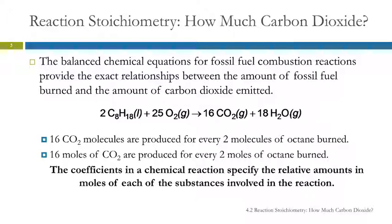Just like if you were making pancakes and the recipe called for two eggs — if you were going to make a dozen recipes, how many dozen eggs would you need? Two dozen, right? Because it's just a counting unit. So if you have the relationship between individual numbers and you throw a dozen or mole in there, the relationship is the same. So we have 16 moles of carbon dioxide for every two moles of octane burned.